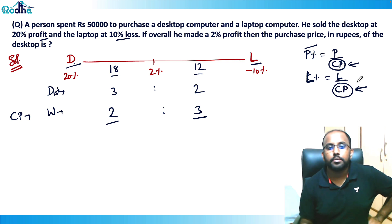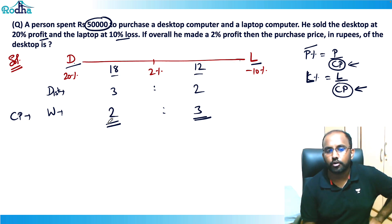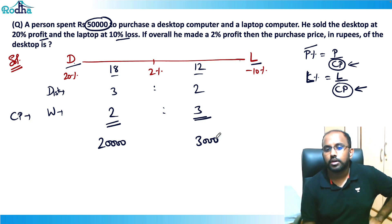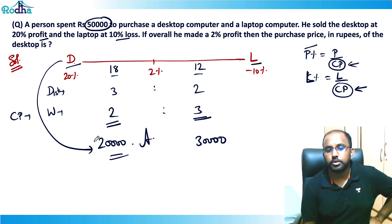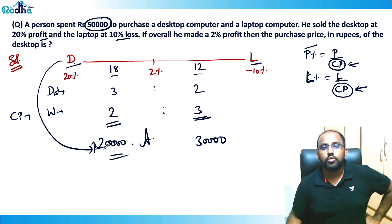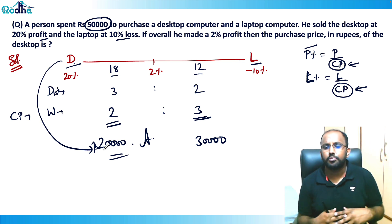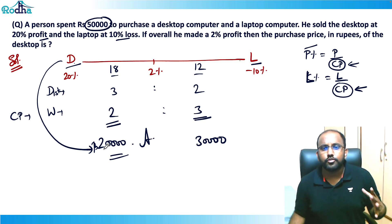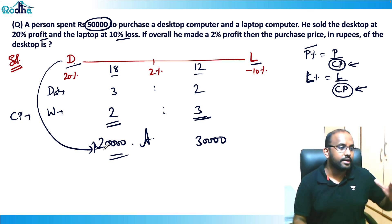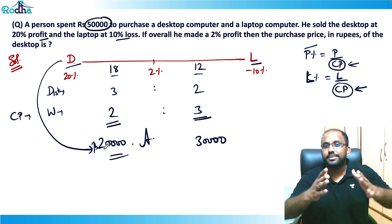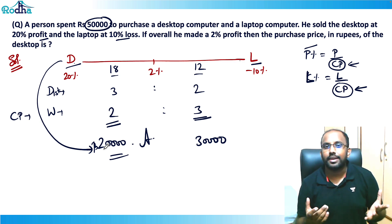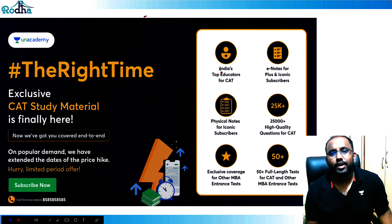The ratio of cost price is 2 to 3, and he spent a total of ₹50,000. Dividing ₹50,000 in the ratio 2 to 3 gives ₹20,000 and ₹30,000. So the desktop's purchase price is ₹20,000 — that's the answer. That's how we apply allegation in such questions: one side is a profit, one side is a loss, and there's a combined overall result.